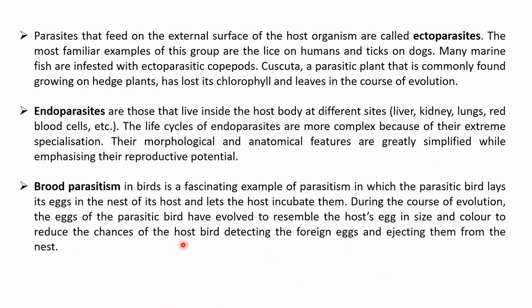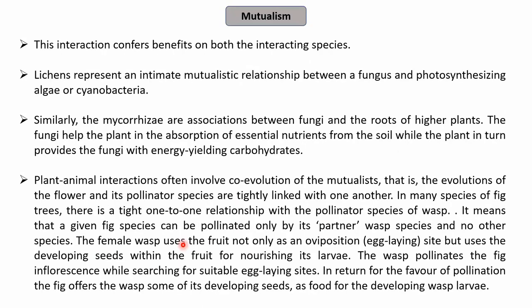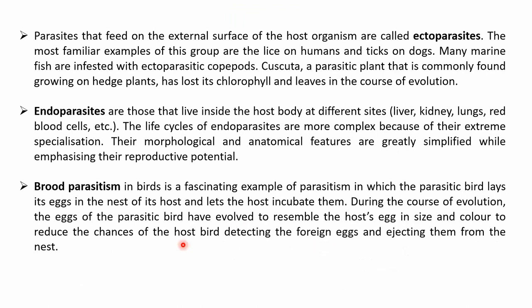The next type of parasitism is brood parasitism — a fascinating example where a parasitic bird lays its eggs in the nest of its host and lets the host incubate them. During the course of evolution, the eggs of parasitic birds have evolved to resemble the host's eggs in size and color, reducing the chances of the host detecting the foreign eggs and ejecting them from the nest. Brood parasitism is very common in the coel (koel) and crow, where the koel lays its eggs in the crow's nest, and due to the similarity in size and color of the eggs, the host cannot identify the foreign eggs and ends up incubating them.